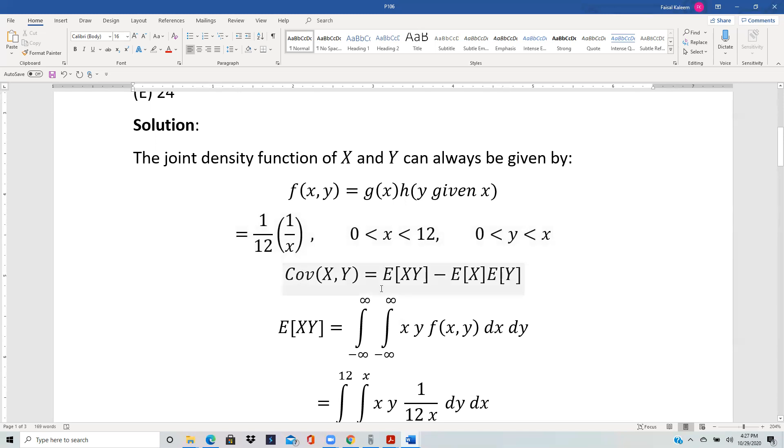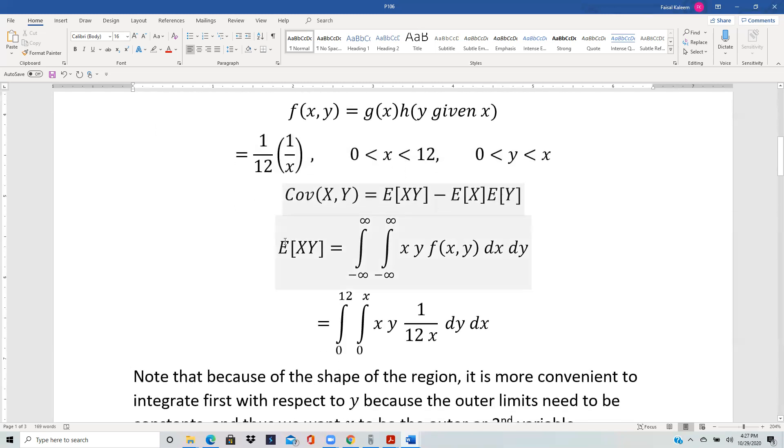Covariance of X, Y equals E[XY] minus E[X]E[Y]. E[XY] is the double integral of xy against the joint PDF. Here, because of the way the limits are given, the best way to integrate it is to do it with respect to y first. Y has limit 0 to x, and then x has 0 to 12. Remember outer limits have to be constants no matter what.